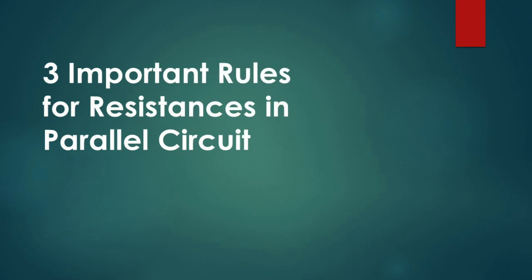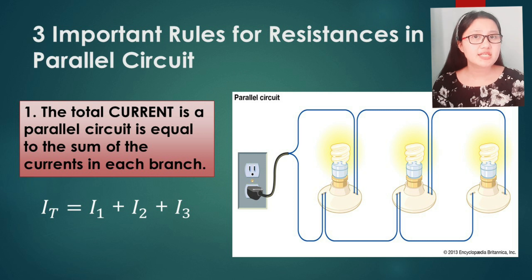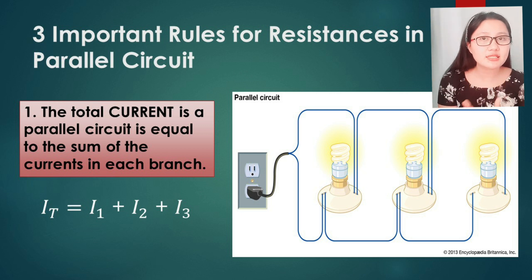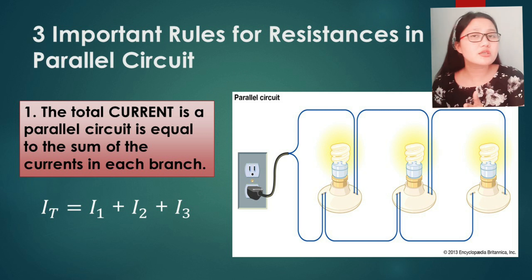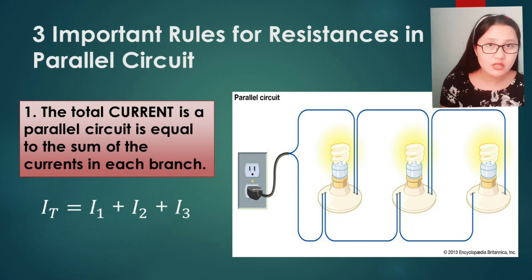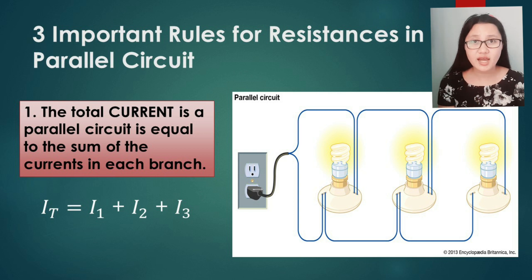Now let us talk about the three important rules for a parallel circuit — specifically how the current, voltage, and resistance differ. For the first rule in a parallel circuit: the total current is equal to the sum of currents in each branch. Each branch has a different electric current, and when we add them all together, it gives us the total current. The formula is IT = I1 + I2 + I3, depending on how many branches you have.